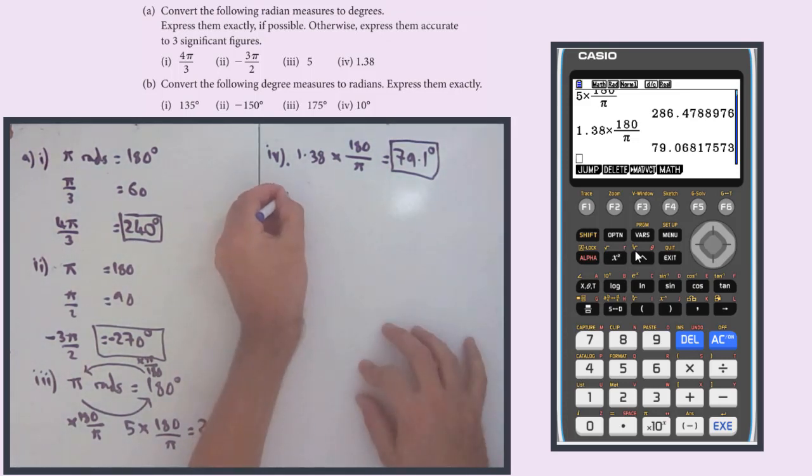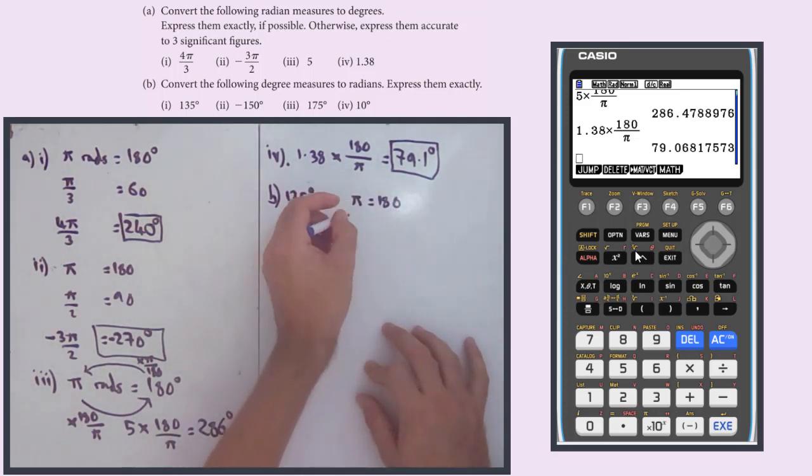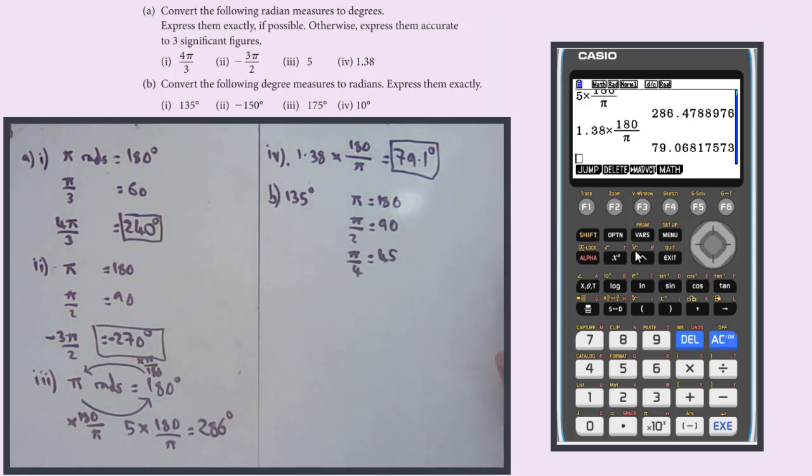So the first one, 135 degrees. Well, we know that π equals 180. So if we just use a bit of direct proportion, π by 2 is going to be 90. And π by 4 is going to be 45. So we want to get to 135. So if we take these two and add them, well, that will get us 135. So π by 2 could be 2π by 4. Plus 1π by 4 equals 3π by 4. And if you want to check that, just take 135 degrees and times it by π over 180. It should get us to the same place.